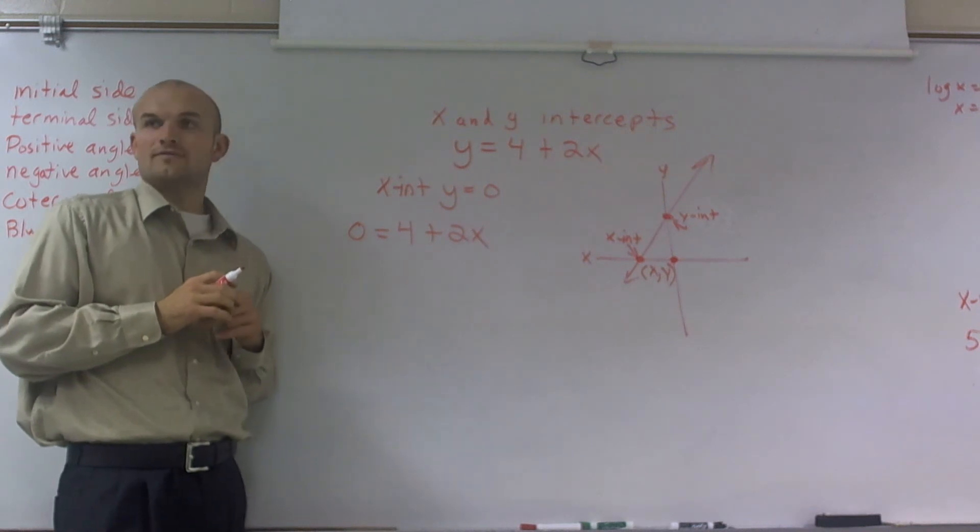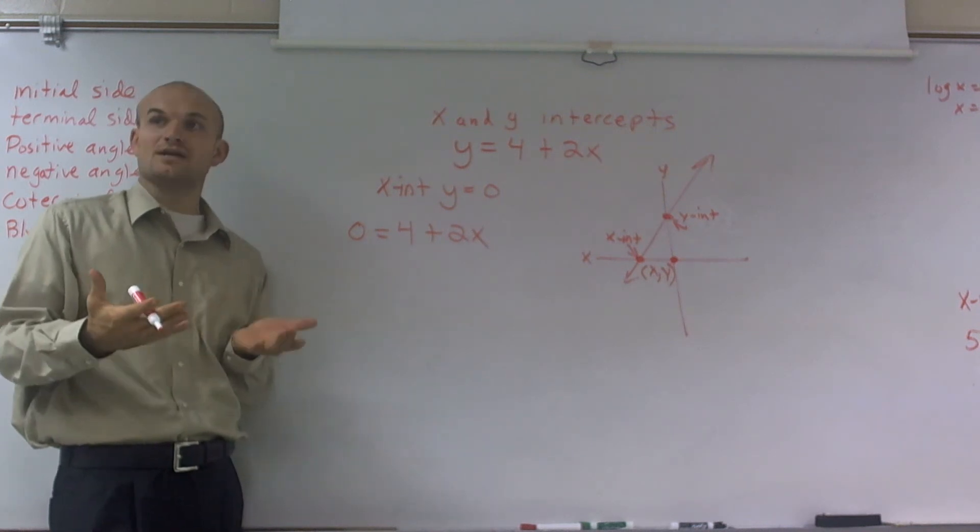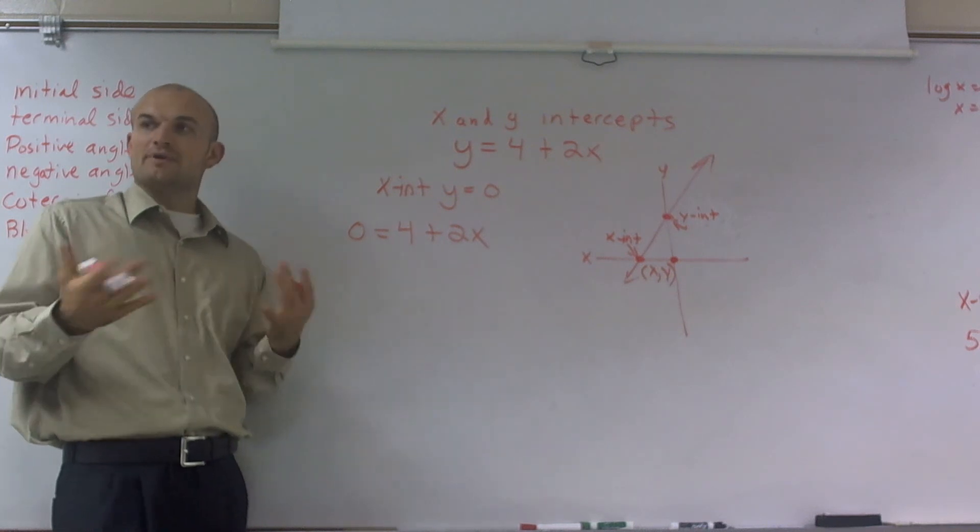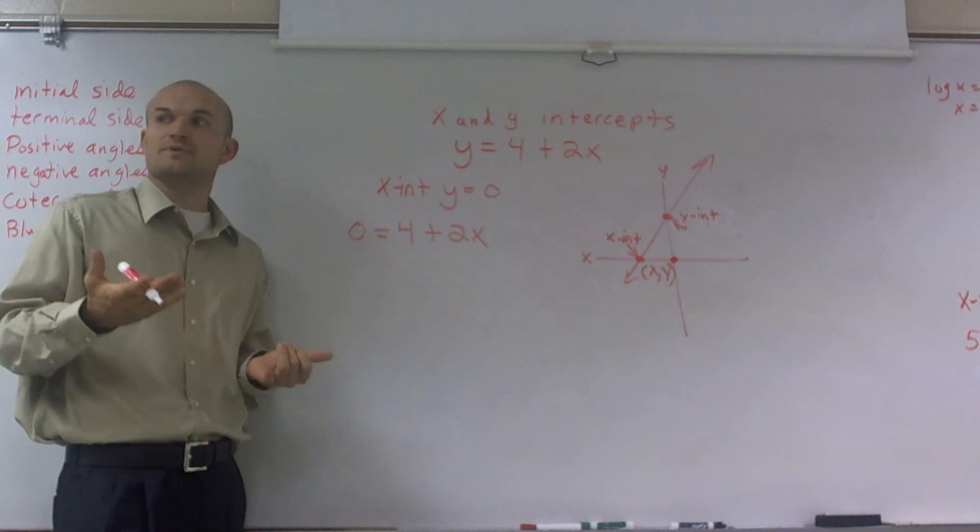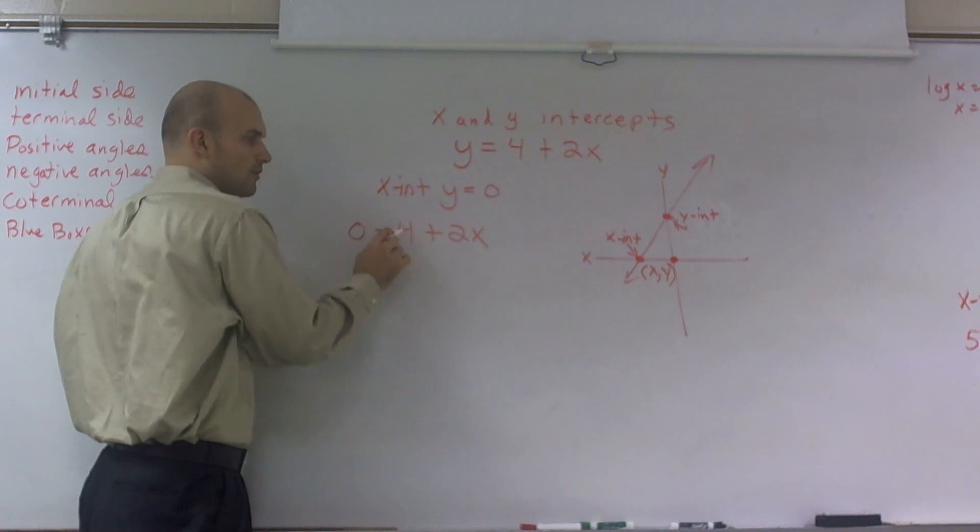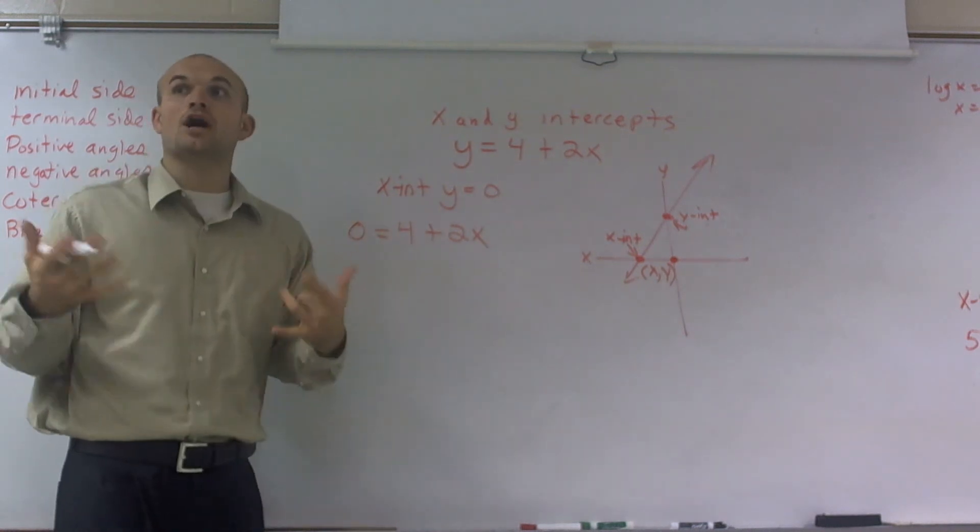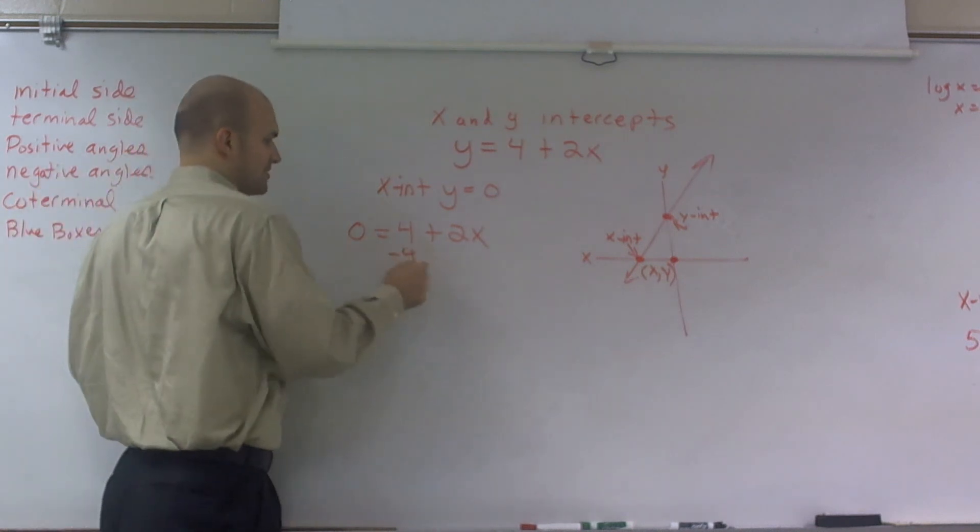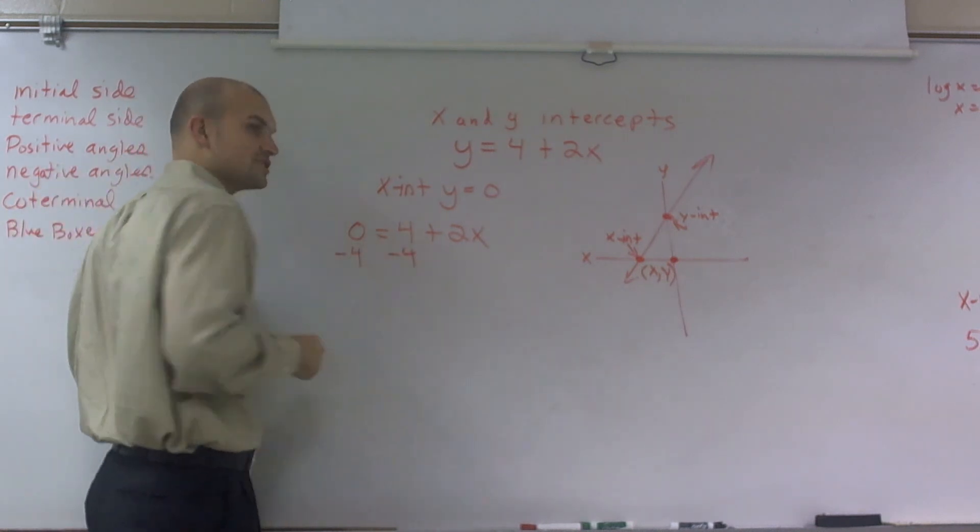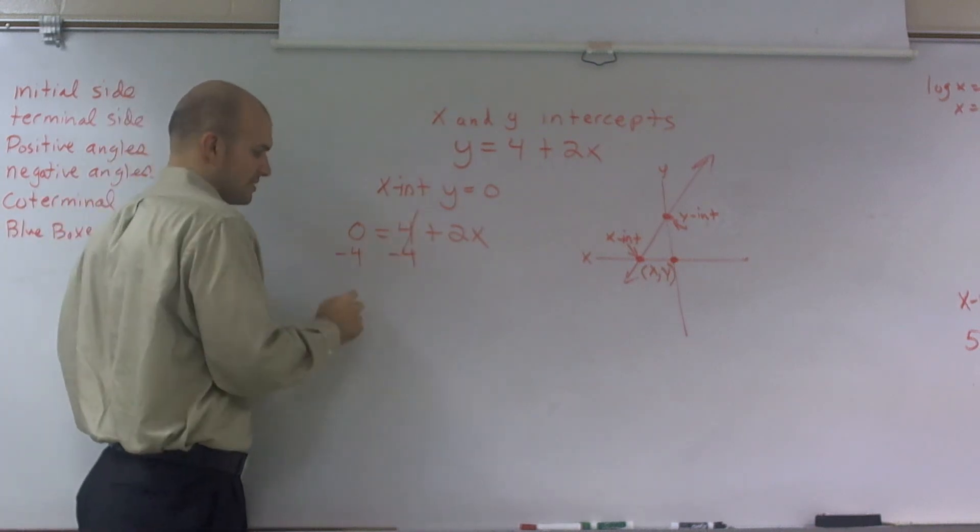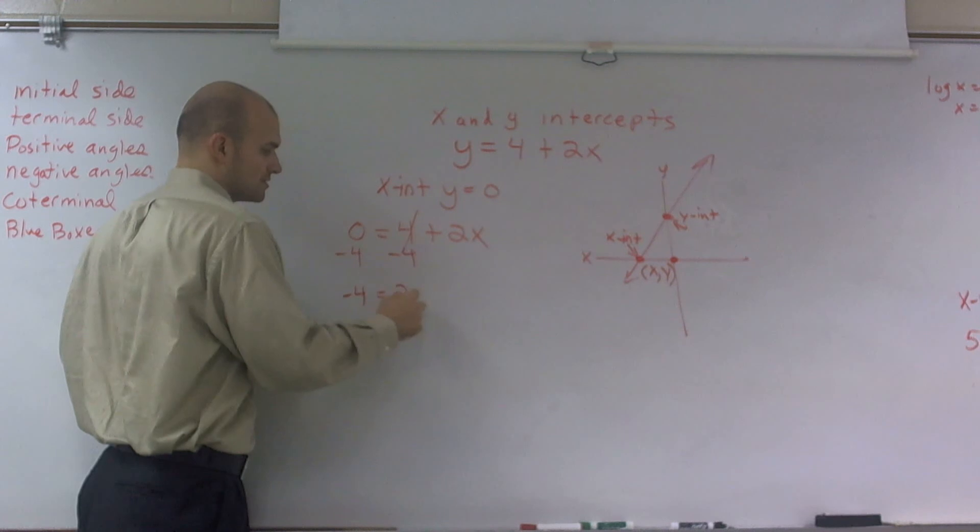So if you guys remember our warm-up, we talked about solving for x. So when you want to do this, remember, you've got to get your x by itself. So what's happening to my variable? Well, I'm adding a 4 to it, and I'm multiplying by 2. So we always undo addition and subtraction first. So I'm going to undo addition of a 4 by subtracting. That's going to cancel to give me 0, so I'm left with negative 4 equals 2x.